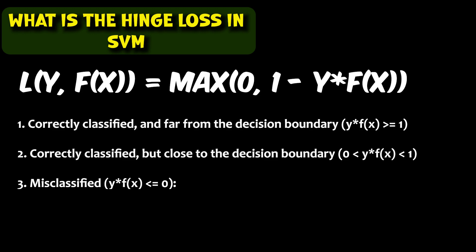The next situation is when y times f(x) is greater than 0 but less than 1. In this case, the loss is positive but less than 1. The hinge loss function penalizes points that are within the margin even if they are correctly classified. This encourages a model that maximizes the margin between classes.